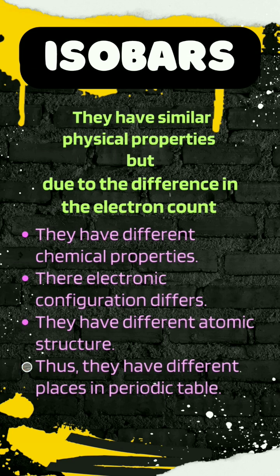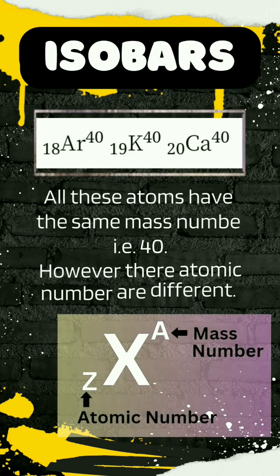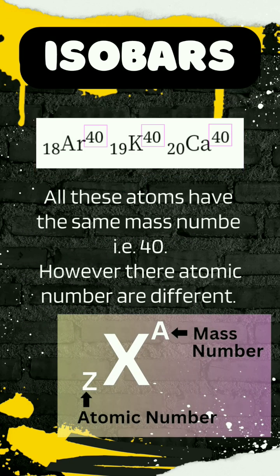Thus, isobars have different places in the periodic table. For instance, all these atoms have the same mass number, that is 40, however their atomic numbers are different.